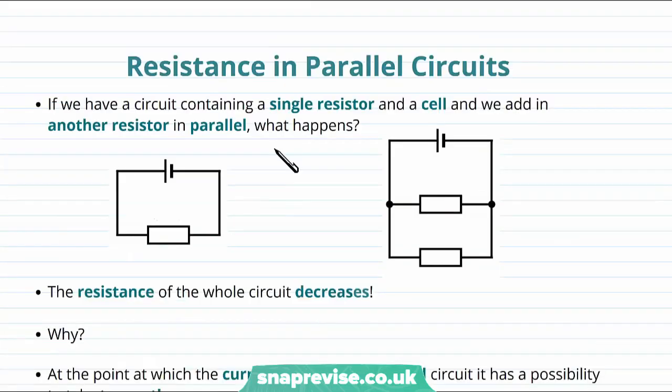Let's now talk about resistance in parallel circuits. So if we have a circuit containing a single resistor and a cell, such as this circuit here, and then we add in another resistor in parallel, like this resistor here, the question is what happens? It turns out that the resistance of the whole circuit will actually decrease.